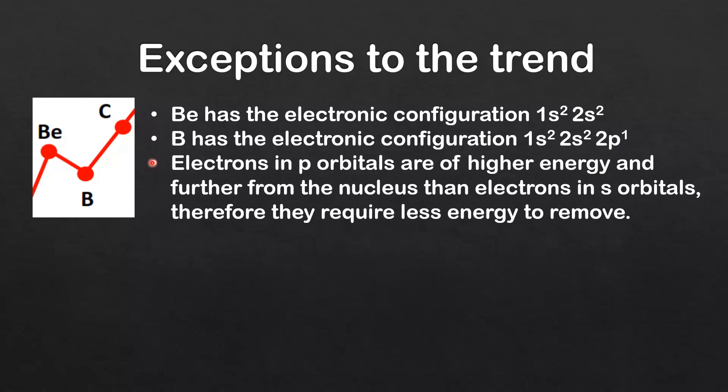Electrons in p orbitals are of higher energy and further from the nucleus than electrons in s orbitals, therefore they require less energy to remove. So the electron in this 2p orbital in boron requires less energy to remove than the electron in the 2s orbital, therefore you get the decrease in ionization energy.